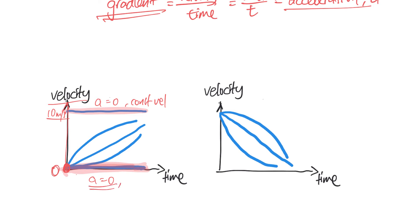For the other cases on the velocity-time graph: a straight upward line means constant gradient, so constant acceleration. A curve getting less steep means decreasing gradient — decreasing acceleration. And a curve getting steeper means increasing gradient — increasing acceleration.